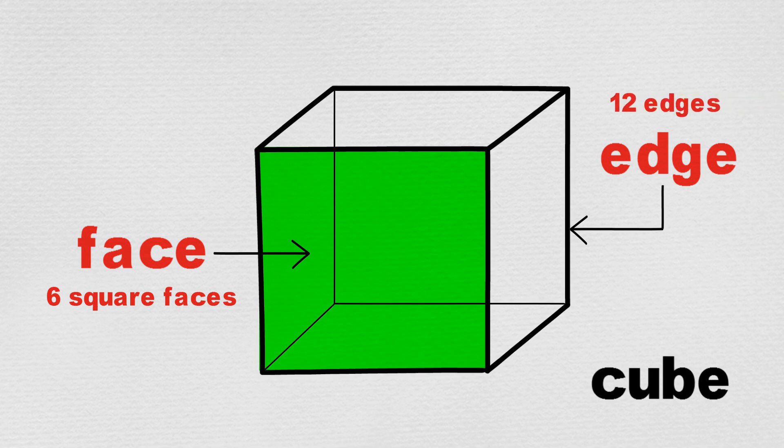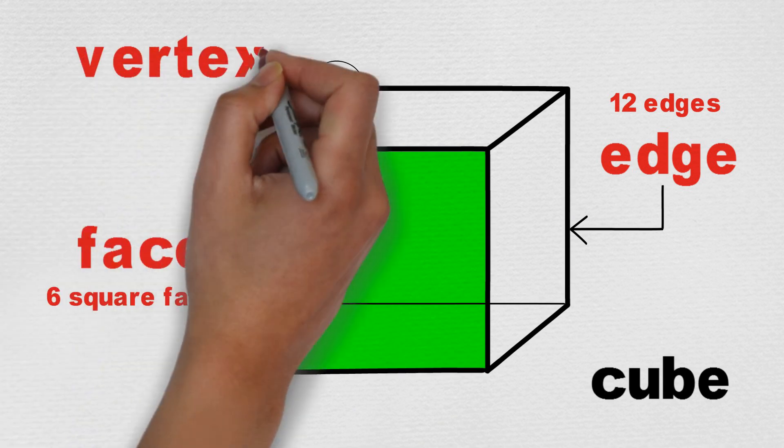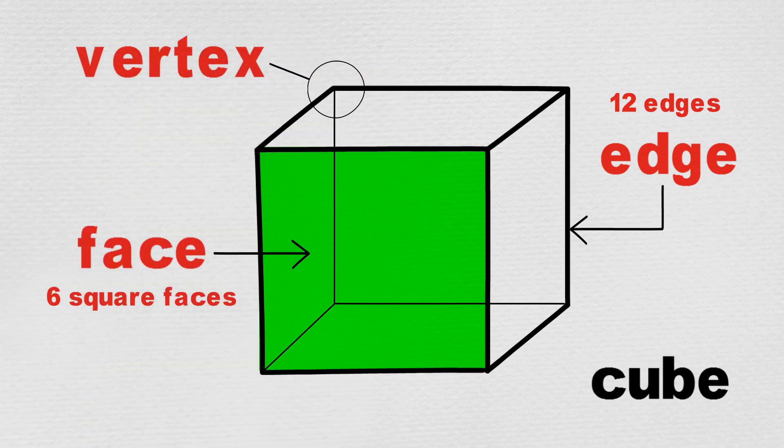The point where the edges of a solid object meet, at a corner, like this, is called a vertex. More than one vertex are called vertices. A cube has eight vertices.